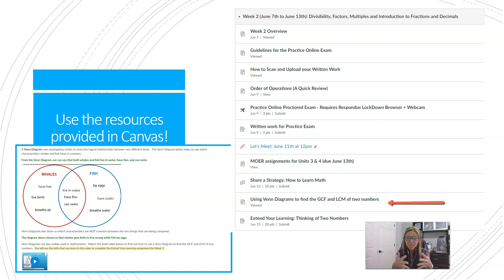If you've already looked at the content page on the mini lesson that came before it, they're related. I'm teaching you how to do the problems on the extend your learning assignment when you go through that mini lesson on the content page, so they're definitely connected. Make sure you're using those resources.